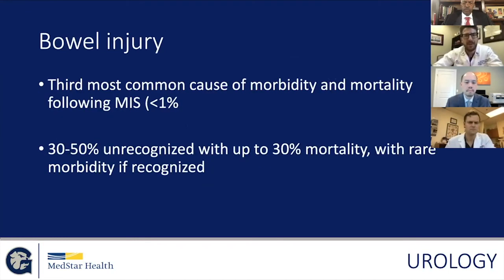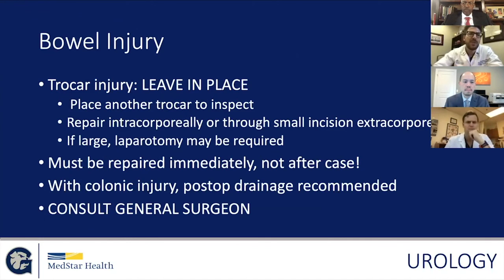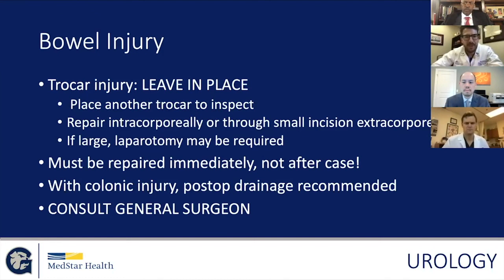Bowel injury is the third most common cause of morbidity and mortality following minimally invasive surgery — still fairly rare but a huge problem. 30 to 50% are unrecognized, and when that happens there's a 30% mortality rate. We're all very cognizant of avoiding bowel injury, and this is the reason why. If we find it at the time, we can fix it and morbidity is rare. If you have a trocar injury, the main thing is don't take it out — leave it in place, put another trocar in laterally to inspect the injury, and repair as needed. Do not wait on repair and do not wait on consulting general surgery — this needs to be repaired immediately, not after the case is done. Don't be a cowboy; get your help.